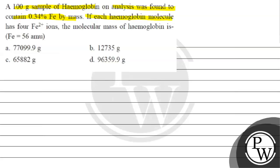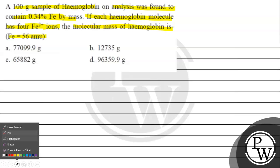If each hemoglobin molecule has 4 Fe+2 iron, the molecular mass of hemoglobin is Fe atomic mass. How much is it? 56 AMU. Options are given to us.